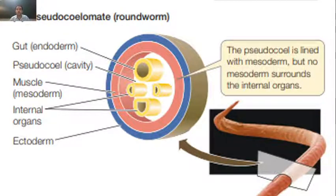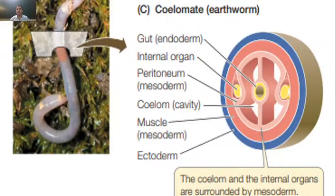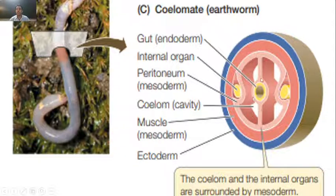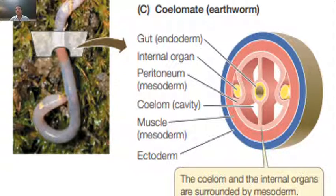I hope you understand the difference between acoelomates and pseudocoelomates. Finally, in true coelomates, these animals have the true coelom. True coelom means it is a cavity lined by mesoderm on both the outer side and inner side, and the internal organs are also surrounded by mesoderm on all sides. These are the three types of animals on the basis of coelom: acoelomate, pseudocoelomate, and coelomate.